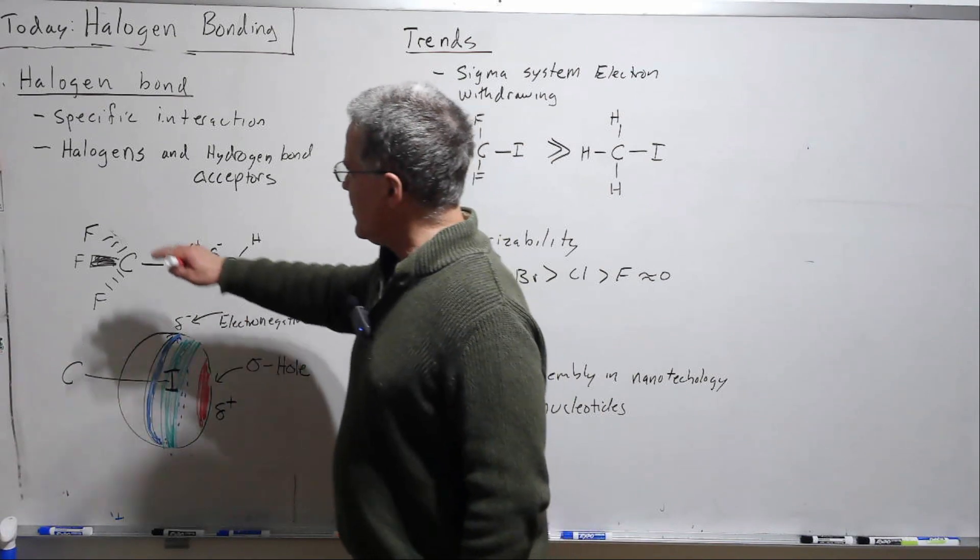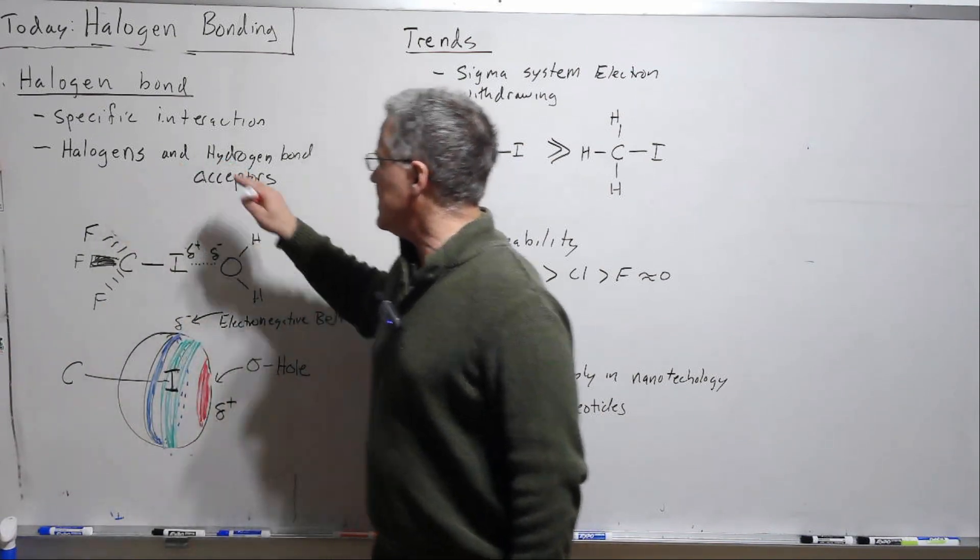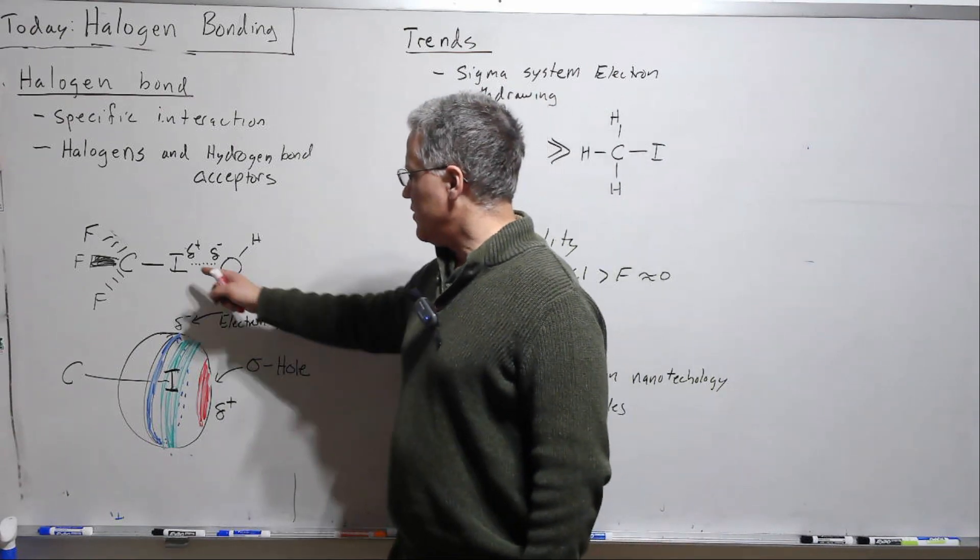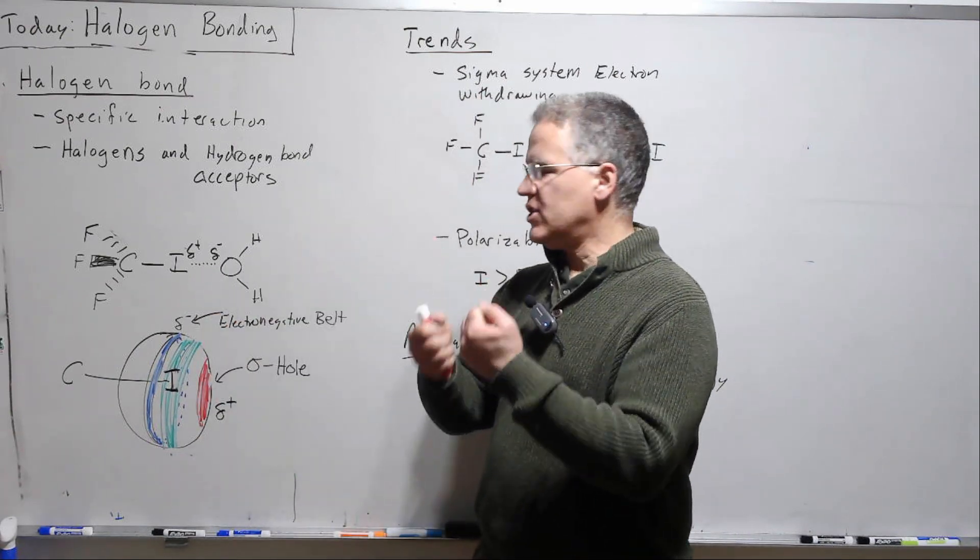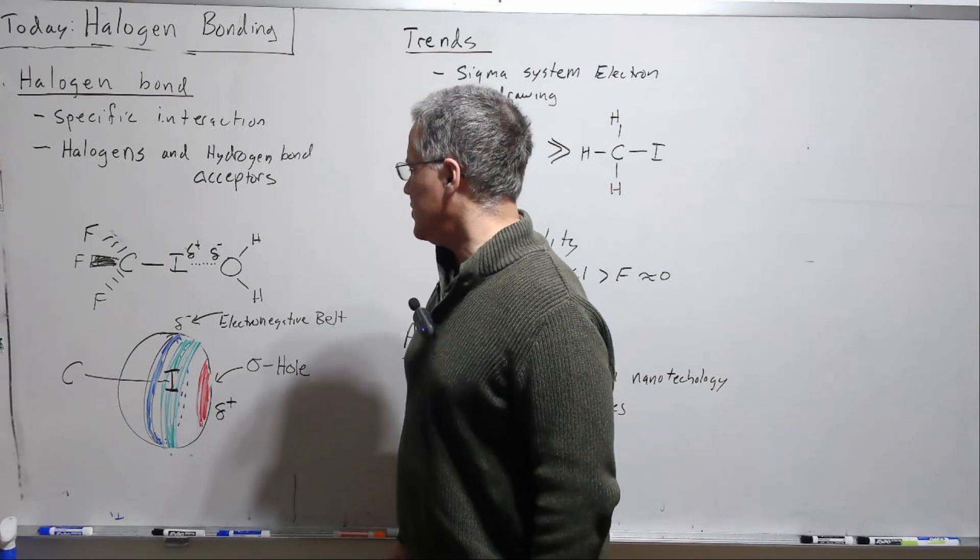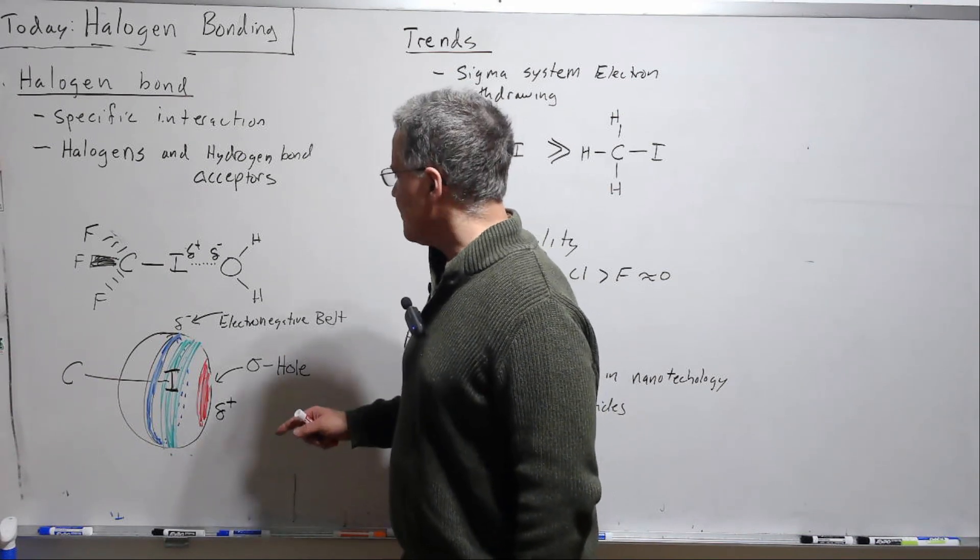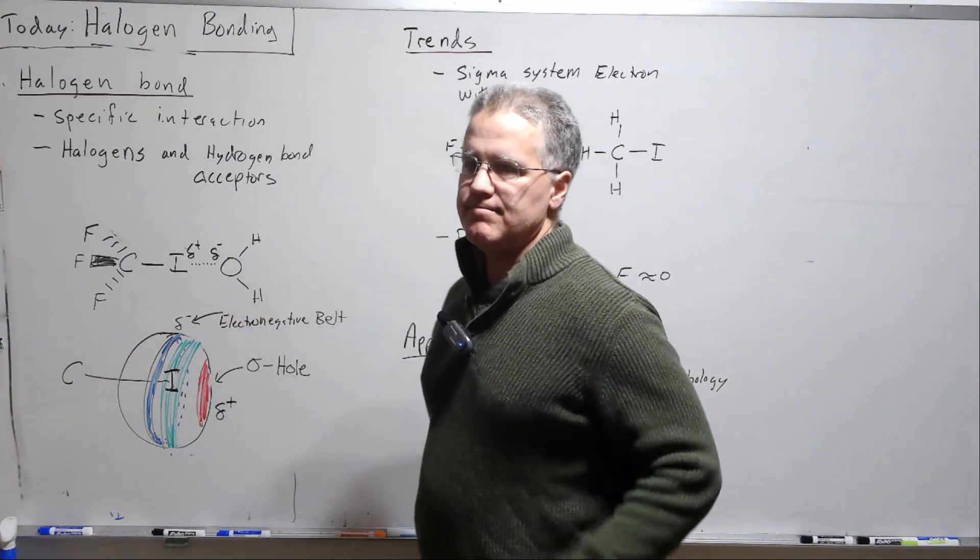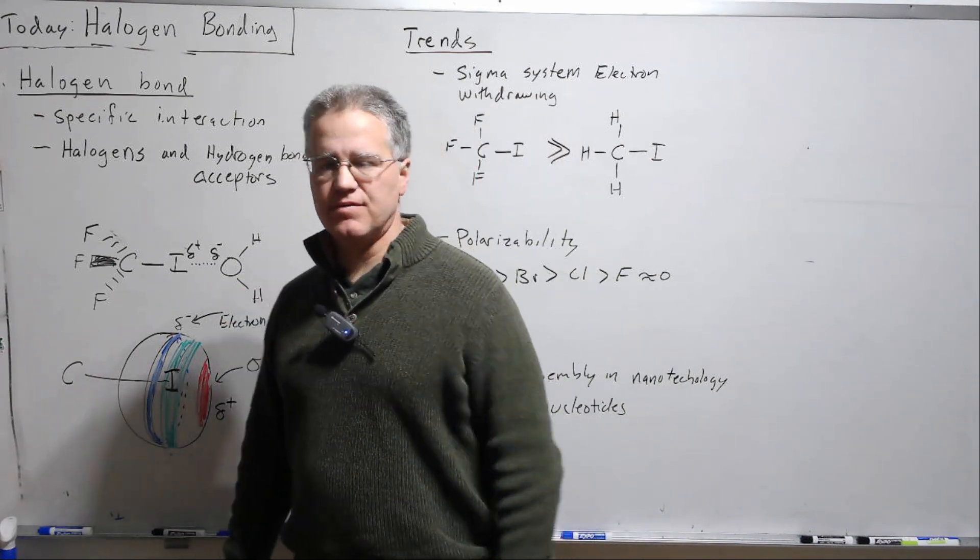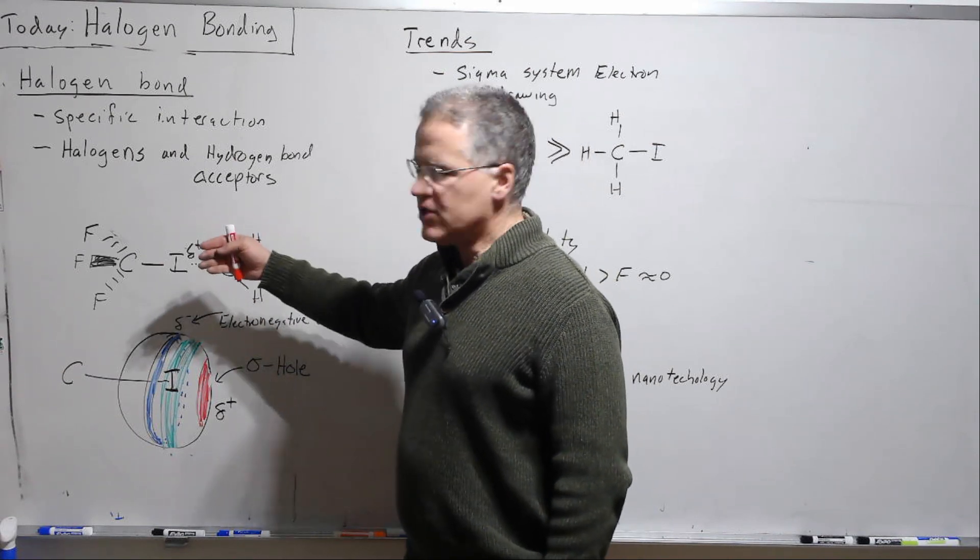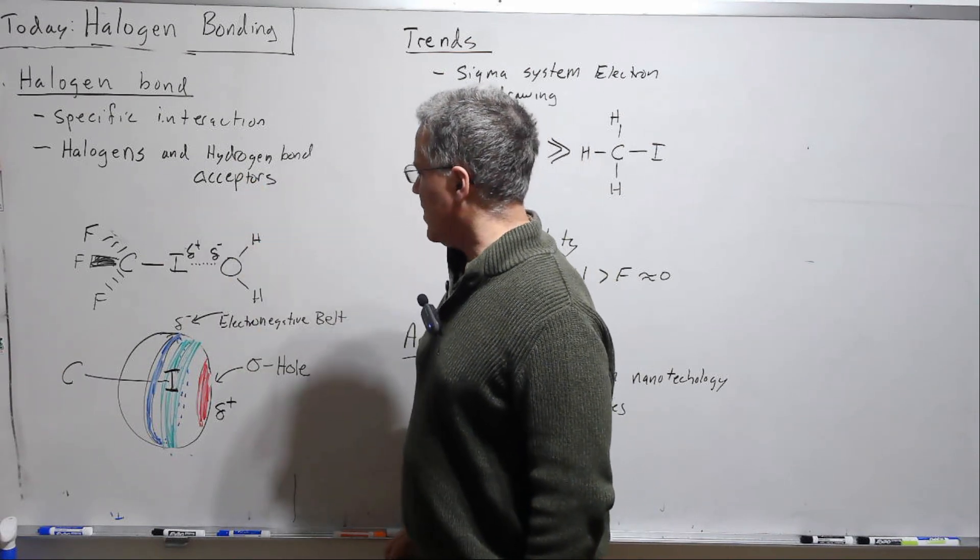So this occurs between halogens and hydrogen bond acceptors, acceptors being those that want to accept the H and donate their electrons to the hydrogen bond or the halogen bond. For example water, nitrogen, fluoride compounds as well can hydrogen bond so then they can halogen bond.